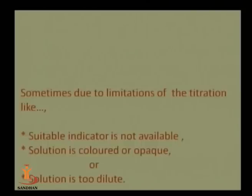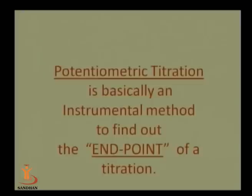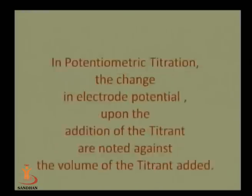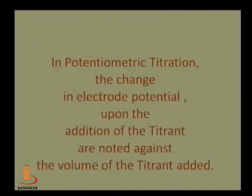Potentiometric titration is widely used in the laboratory. It is an instrumental method to find out the endpoint of a titration. In potentiometric titration, two types of electrodes are used: one is the indicator electrode and one is the reference electrode. The change in electrode potential upon addition of the titrant is noted against the volume of titrant added.